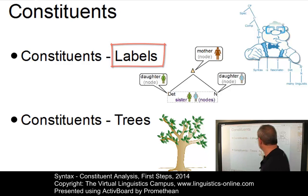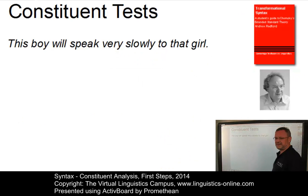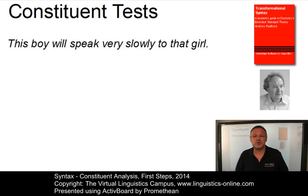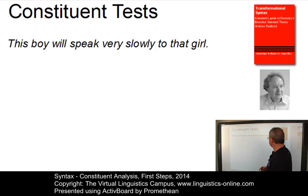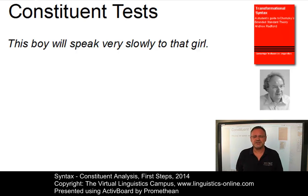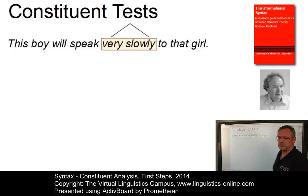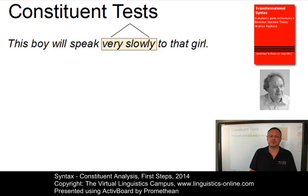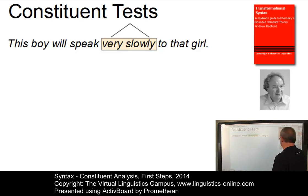Let's repeat first. In the e-lecture Constituent Tests, we looked at the sentence 'This boy will speak very slowly to that girl' — a sentence taken from Andrew Radford's 1977 book Transformational Syntax. We decided that, for example, 'very slowly' is a constituent. Let's quickly outline the reasons for our decision.